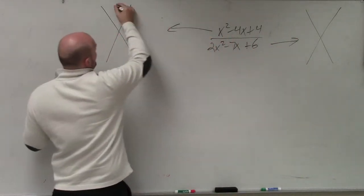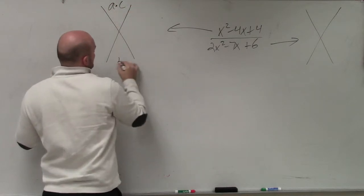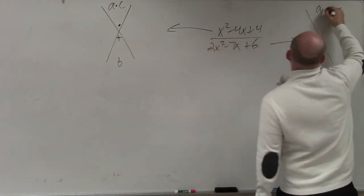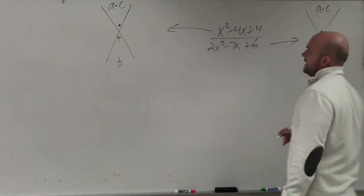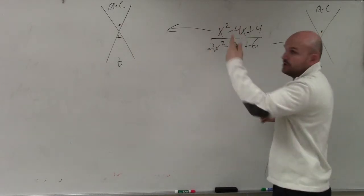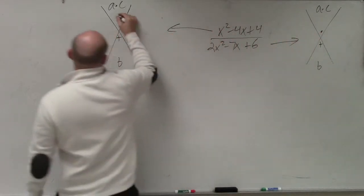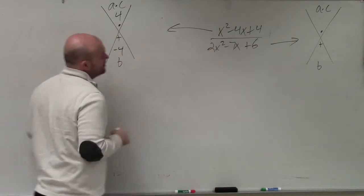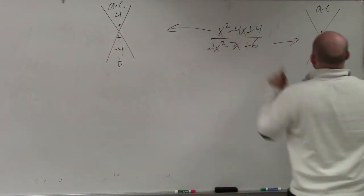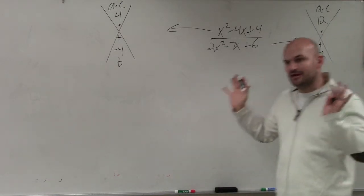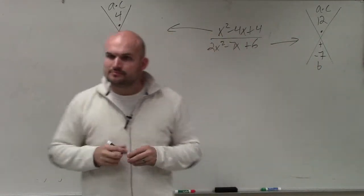So the first one, again, remember, we always do a times c and b. Multiply, add. a times c and then b. Multiply and add. So basically, in this example, which I'm going to do over here, my a is 1, right? So I do 1 times 4, which is 4. And then my b is going to be negative 4. Over here, I have 2 times 6, which is 12. And my b is negative 7. Does everybody follow me?